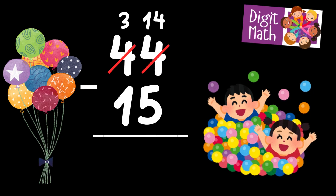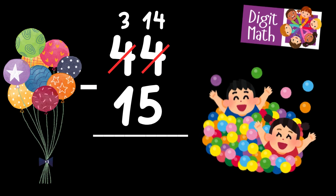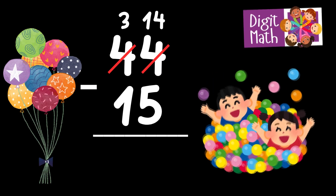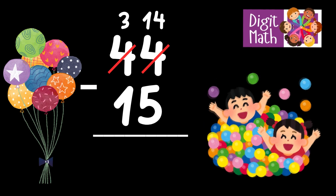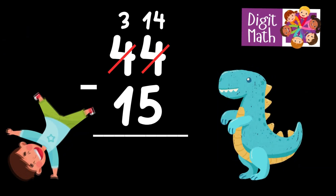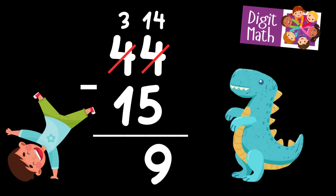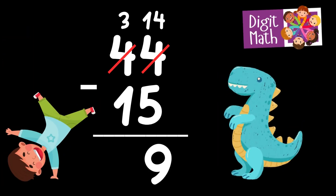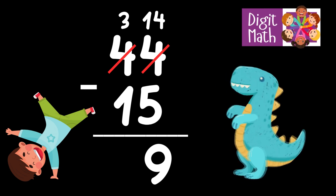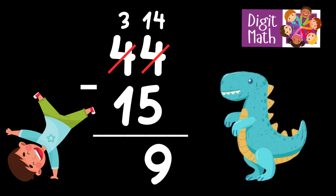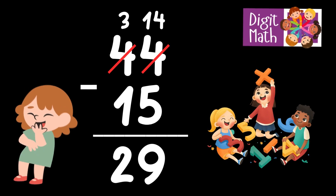Now, we have 14 in the Units column. Subtract 5 from 14, which equals 9. In the Tens column, we now have 3. Subtract 1 from 3, which equals 2. So the final result is: 44 minus 15 equals 29.